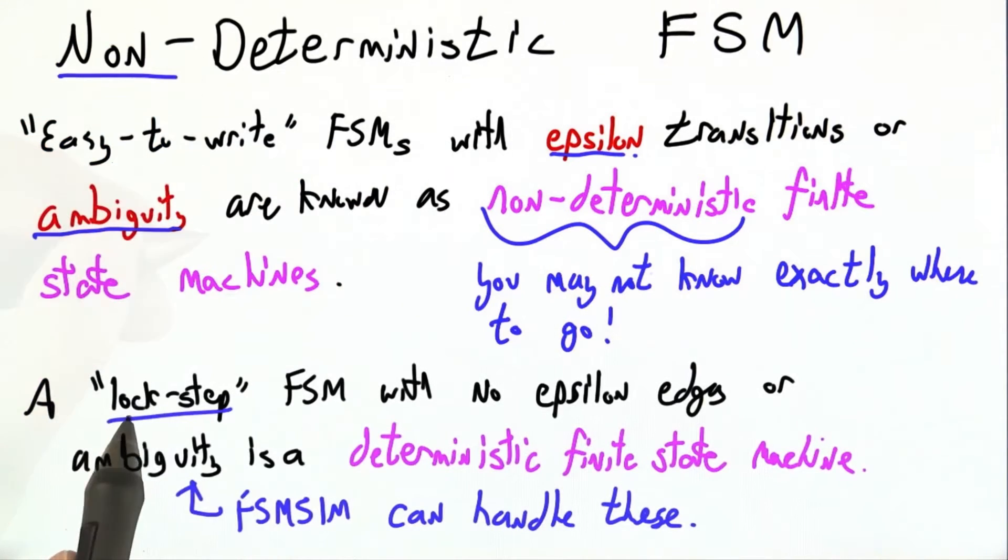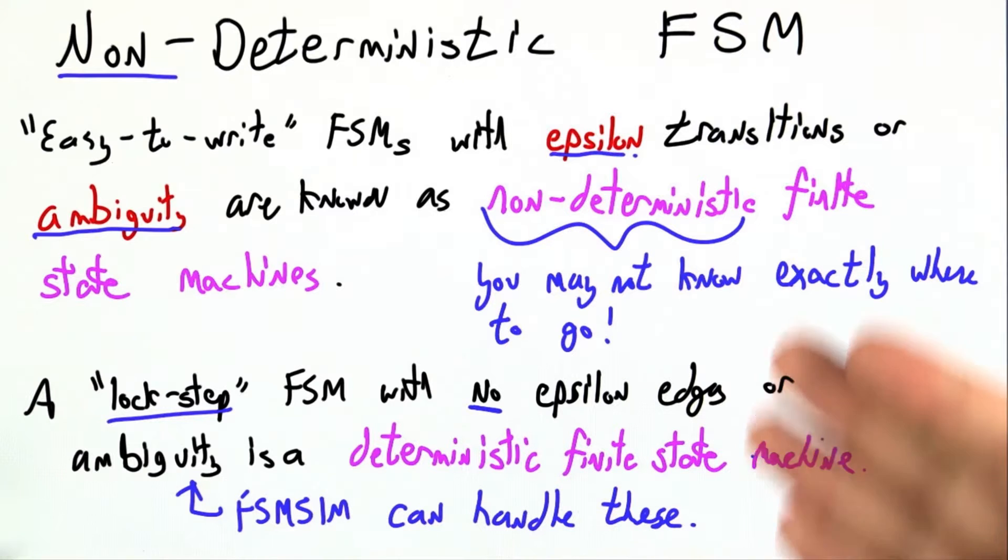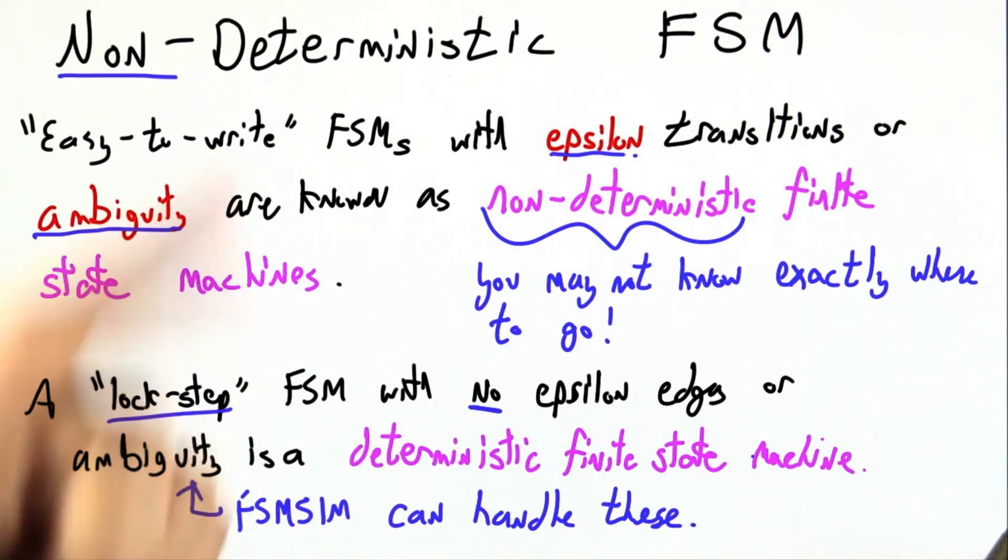A lockstep finite state machine with no epsilon transitions and no ambiguity, by contrast, is called a deterministic finite state machine. Everything is determined from the start. Given the finite state machine and the input, you always know exactly what will happen.